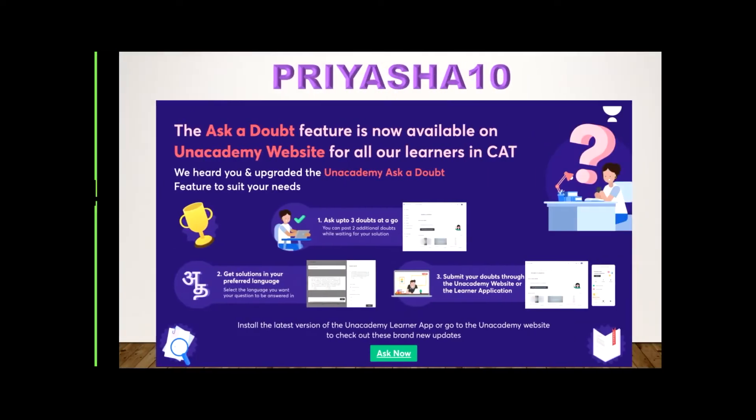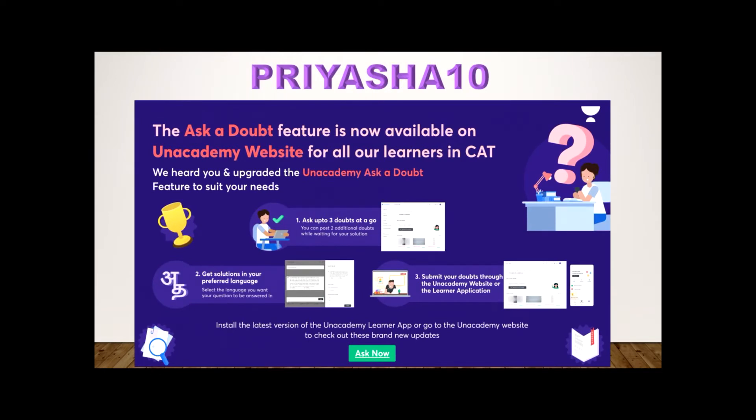But before doing that, let me tell you about a fantastic feature of the Unacademy app, which is now available on the Unacademy website as well. This feature is called the Ask a Doubt feature, which would allow you to ask any doubts at a time and then you would be getting the answers in your preferred language as well.